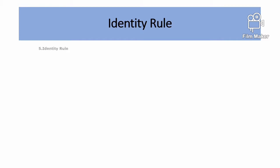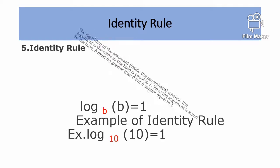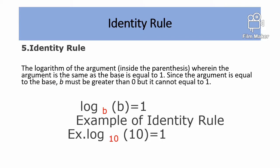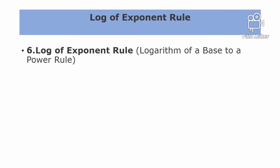Number 5: Identity Rule. The logarithm where the argument is the same as the base equals 1. Since the argument equals the base, b must be greater than 0 but cannot equal 1. Logarithm base b of b equals 1. Example: Logarithm base 10 of 10 equals 1.